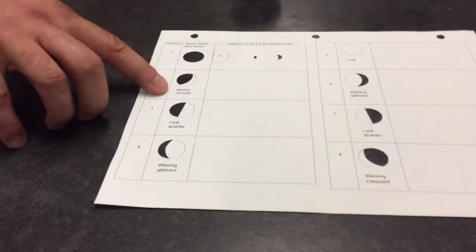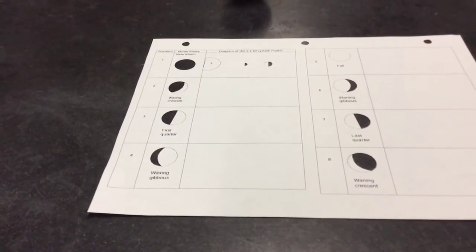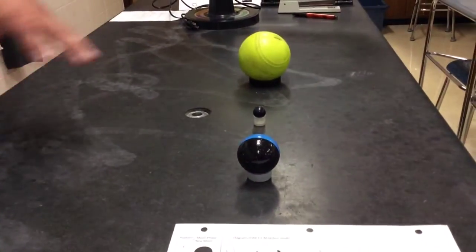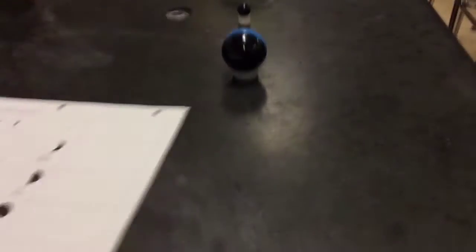Then students have to figure out, okay, well if I want to create the next phase of the moon, which is the waxing crescent, what position or where does that moon have to change, or its position has to change, in order to create that image.